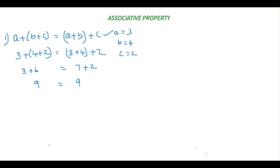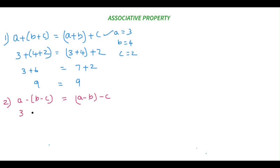Now let's see whether associative property holds good for subtraction. The law for subtraction looks the same, only instead of plus we use minus: a minus (b minus c) equals (a minus b) minus c. Using the same values, this will be: 3 minus (4 minus 2) equals (3 minus 4) minus 2.